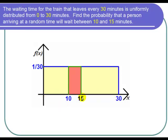We're going from 0 to 30 in terms of the wait times. And for that area of the rectangle to equal 1, the height must be 1 over 30, because 1 over 30 times 30 equals 1.